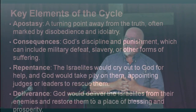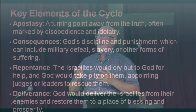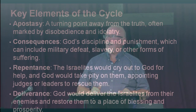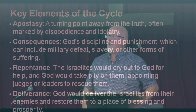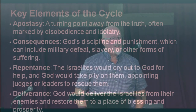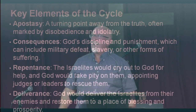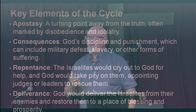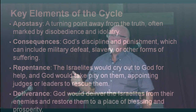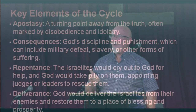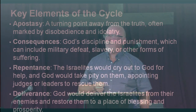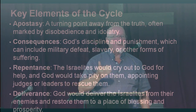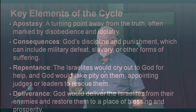The key elements of that cycle: apostasy is a turning away from the truth, often marked by disobedience and idolatry. The consequences are usually God's discipline and punishment, and it can include military defeat, slavery, or other forms of suffering. The next step is repentance, where the Israelites would cry out to God for help, and God would take pity on them, appointing judges or leaders to rescue them. And then God would deliver them from their enemies and restore them to a place of blessing and prosperity.